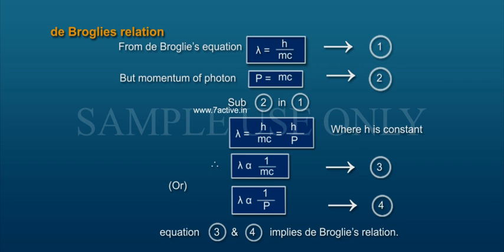Substitute Equation 2 in Equation 1. Lambda is equal to h by mc, which is equal to h by P, where h is constant. Therefore,